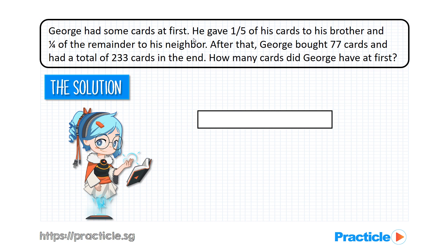We know that whatever the number of cards that George had at first, he gave 1 fifth of his cards to his brother. So what this means is that, out of a total of 5 units, he gave 1 unit to his brother.